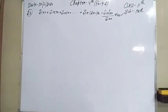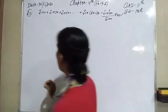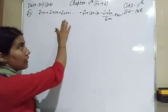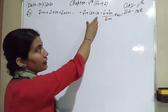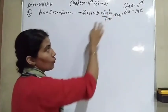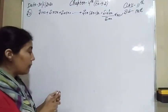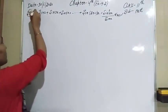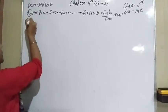Now again by the Principle of Mathematical Induction we have to prove that sin x plus sin 3x plus sin 5x plus up to sin(2n minus 1)x equals sin squared(nx) over sin x, for all n belonging to natural numbers. Let P(n) be this statement.